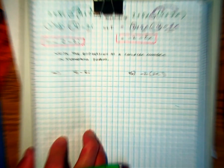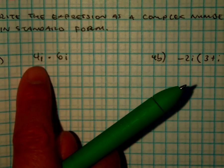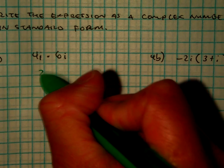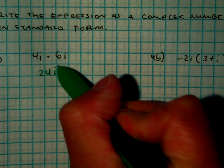So, in this problem, we have a monomial times another monomial. So, 4 times 6 equals 24, and i times i is i squared.